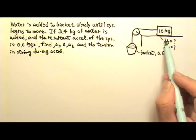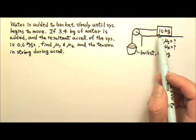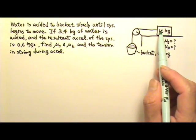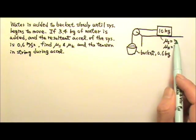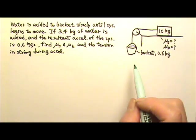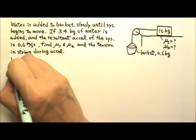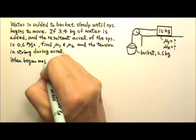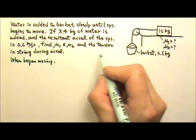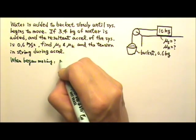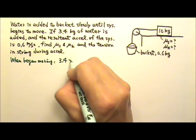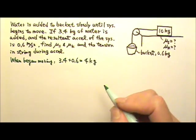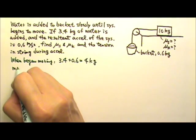For μs, it's related to the bucket with water beginning to make the system accelerate. That's the begin to move part. So when the system began to move, the total mass that's hanging over here would be 3.4 plus the empty bucket, 4 kg will be hanging over here.